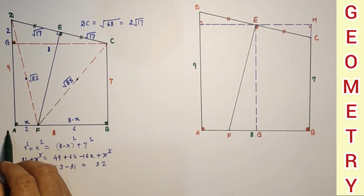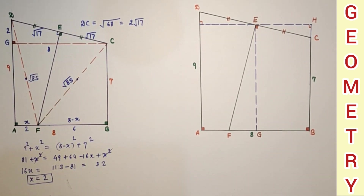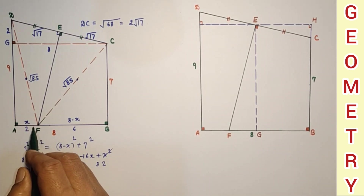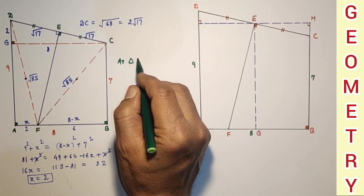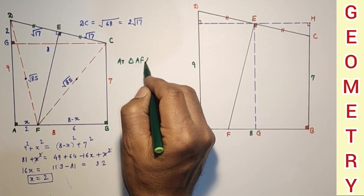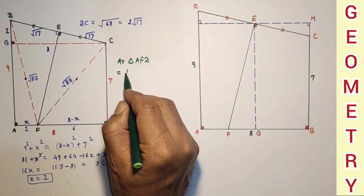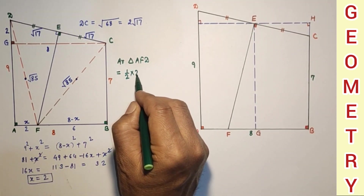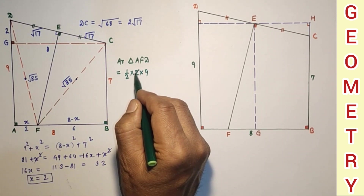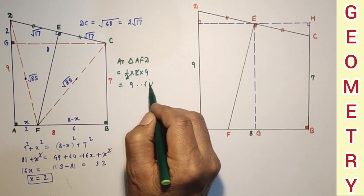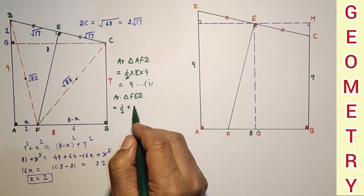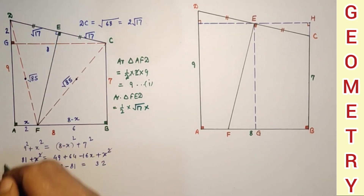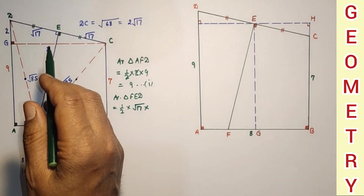The area of quadrilateral AFED equals the sum of areas of triangles AFD and FED. Area of triangle AFD = ½ × base × height = ½ × 2 × 9 = 9 square units. For triangle FED, the base is √17 and the height is EF.